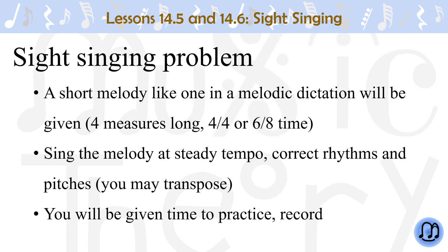In a sight singing problem, a short melody like one in a melodic dictation problem will be given, meaning the melody will be four measures long in 4/4 or 6/8 time. You will have to sing the melody at a steady tempo with the correct pitches and rhythms. You may transpose the melody to whatever key or range you are comfortable with. You will be given time to practice singing the melody and then time to record your final performance when you are ready.